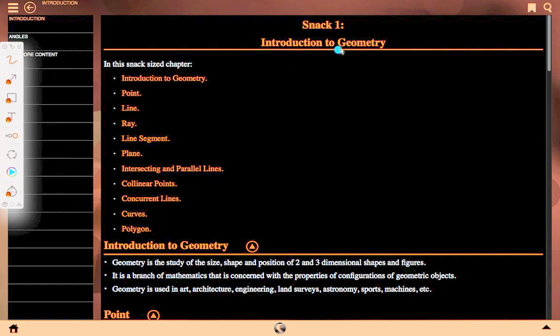F1 introduction to geometry. This is a snack side chapter. In this chapter we will discuss about introduction to geometry, point, line, ray, line segment, plane, intersecting and parallel lines, collinear points, concurrent lines, curves, and polygon.